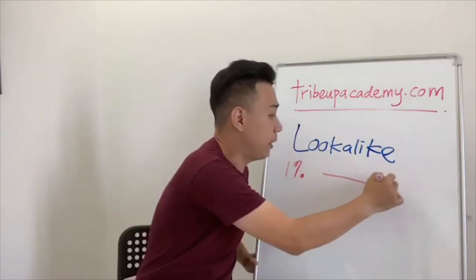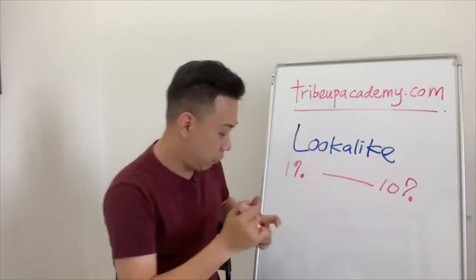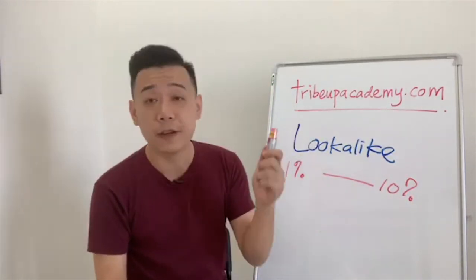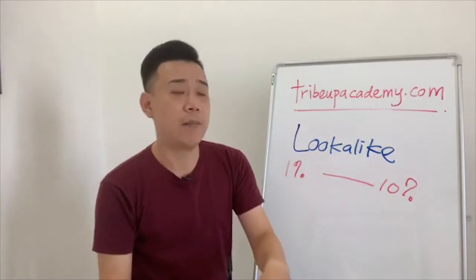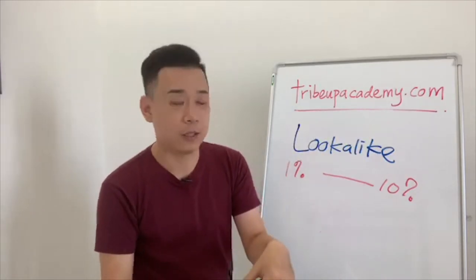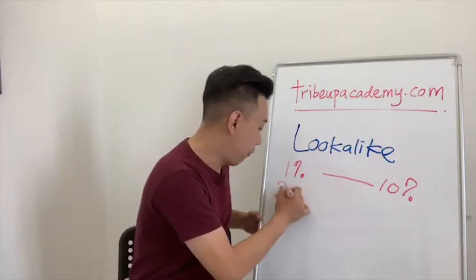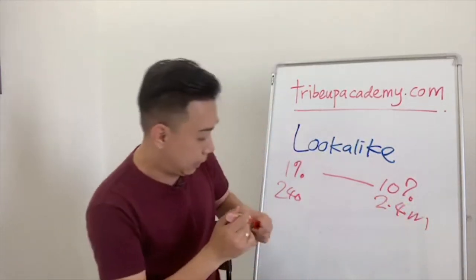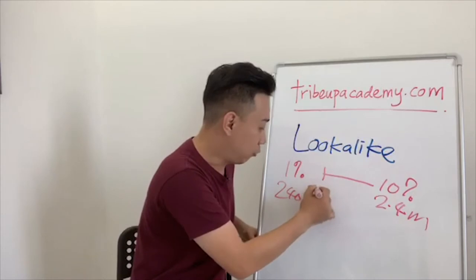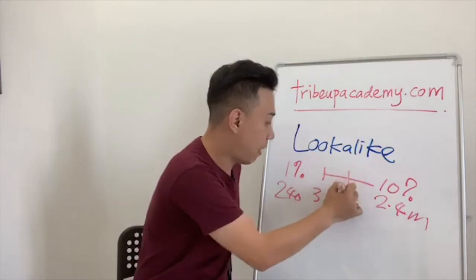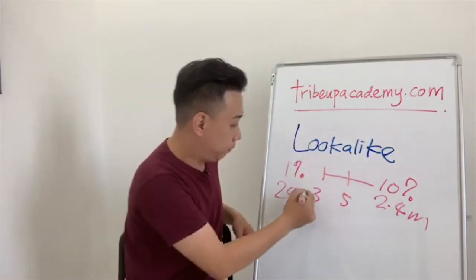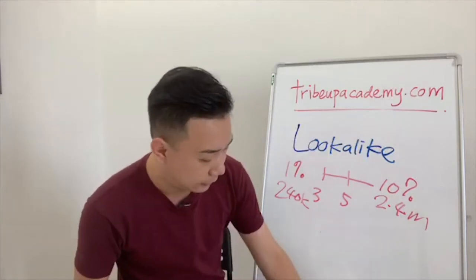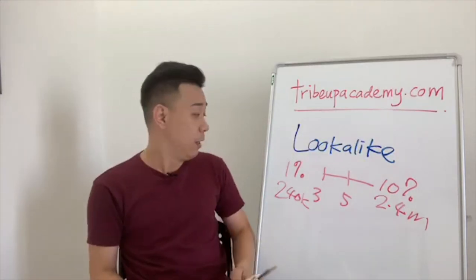Look-alike audience has a percentage range of 1% to 10%, depending on the population of the country you are targeting. For example, in Malaysia there are about 24 million Facebook users, so 1% is 240,000 and 10% is 2.4 million. You can also do 3%, 5%, etc. One percent is usually what we use.